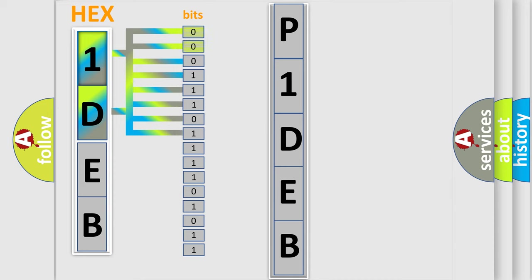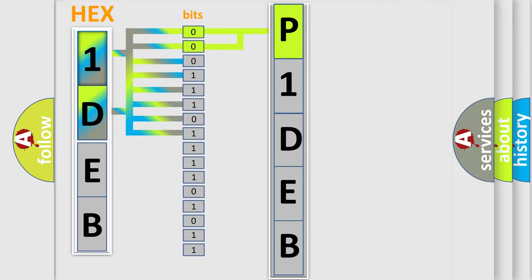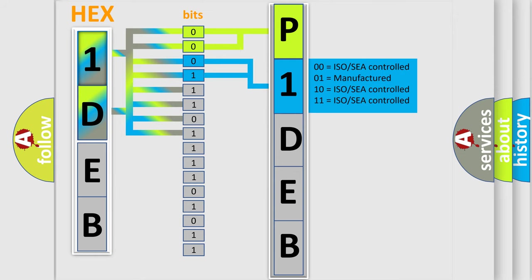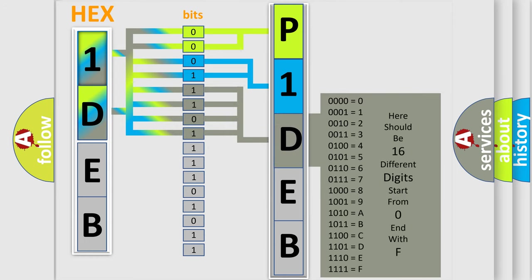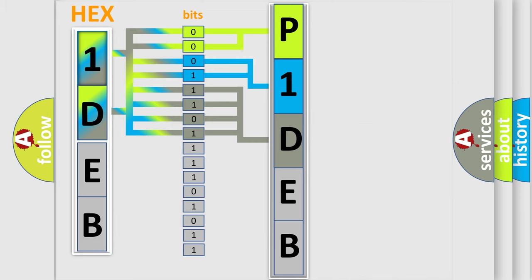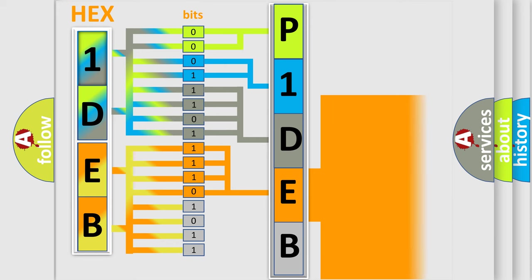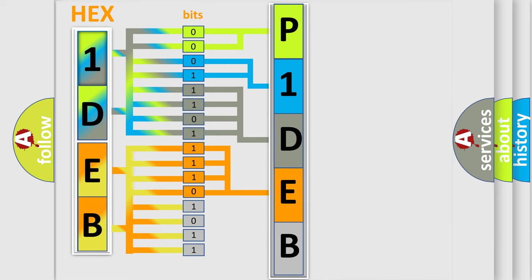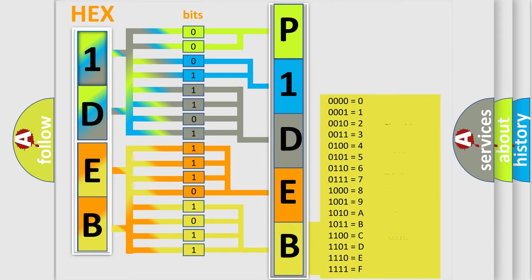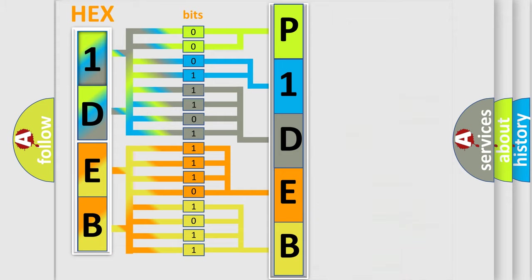By combining the first two bits, the basic character of the error code is expressed. The next two bits determine the second character. The last bits of the first byte define the third character of the code. The second byte is composed of a combination of eight bits. The first four bits determine the fourth character of the code, and the combination of the last four bits defines the fifth character. A single byte conceals 256 possible combinations.